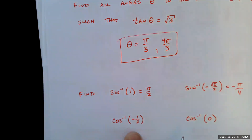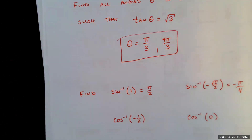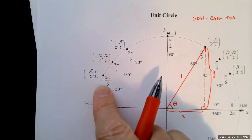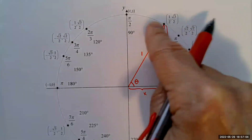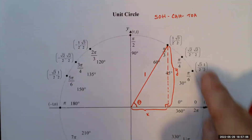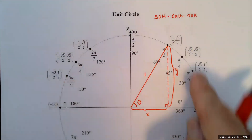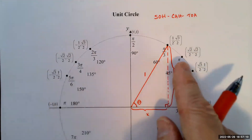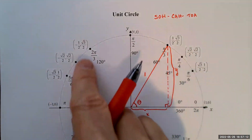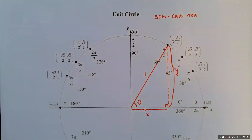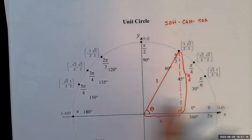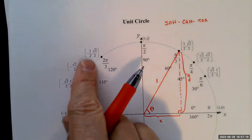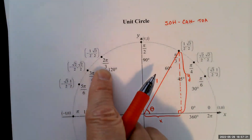For inverse cosine, the range is from 0 to π — covering the first and second quadrants. The inverse cosine of negative 1/2: the x-coordinate is negative 1/2 in the second quadrant, so the answer is 2π/3.